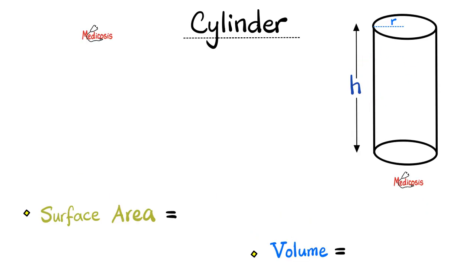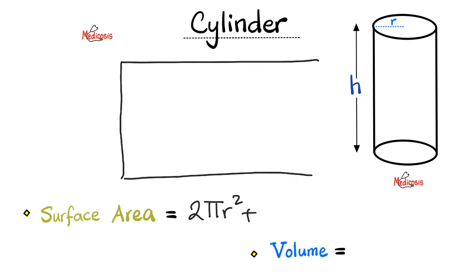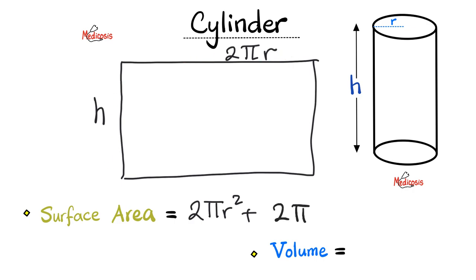Next, the cylinder. For the surface area of the cylinder, you need the surface area of the two circles — which is 2πr squared — plus the surface area of the lateral side. You can unwrap the cylinder and get a rectangle: the height is h, and the length of the rectangle is the perimeter of the circle, which is 2πr. The surface area of that rectangle is length times width: 2πr times h, or 2πrh.